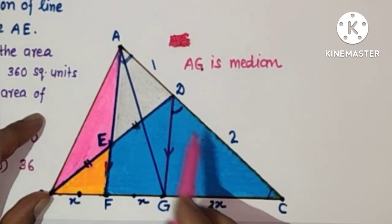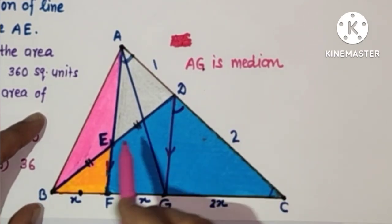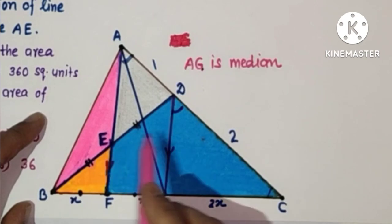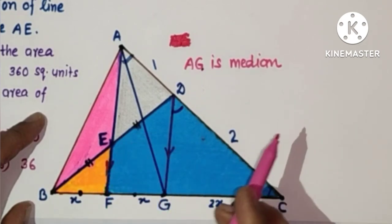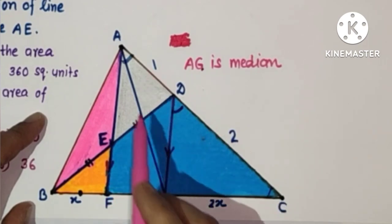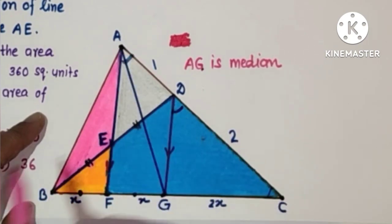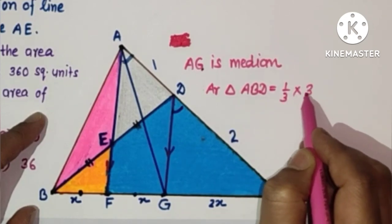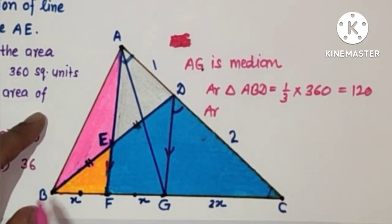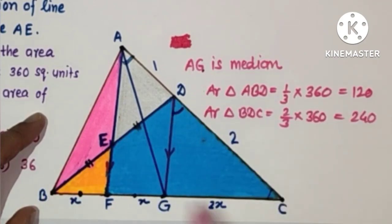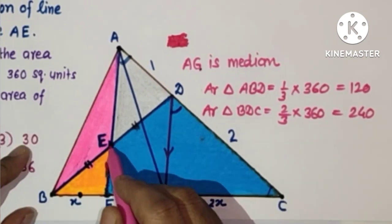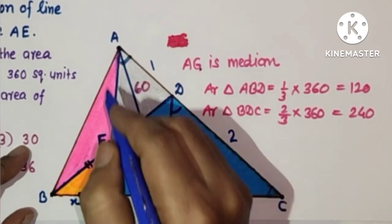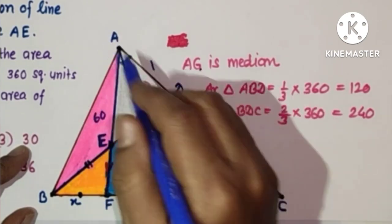Since AD to DC is 1 to 2 and the whole triangle's area is 360, the base ratio is 1 to 2. So area of triangle ABD to area of triangle BDC will be in the ratio 1 to 2. Since 1 plus 2 is 3, area of triangle ABD is one-third of 360, which is 120, and area of triangle BDC is two-thirds of 360, which is 240. Since E is the midpoint of BD, AE is the median of triangle ABD and divides it into two equal areas. So area of triangle AED is 60.